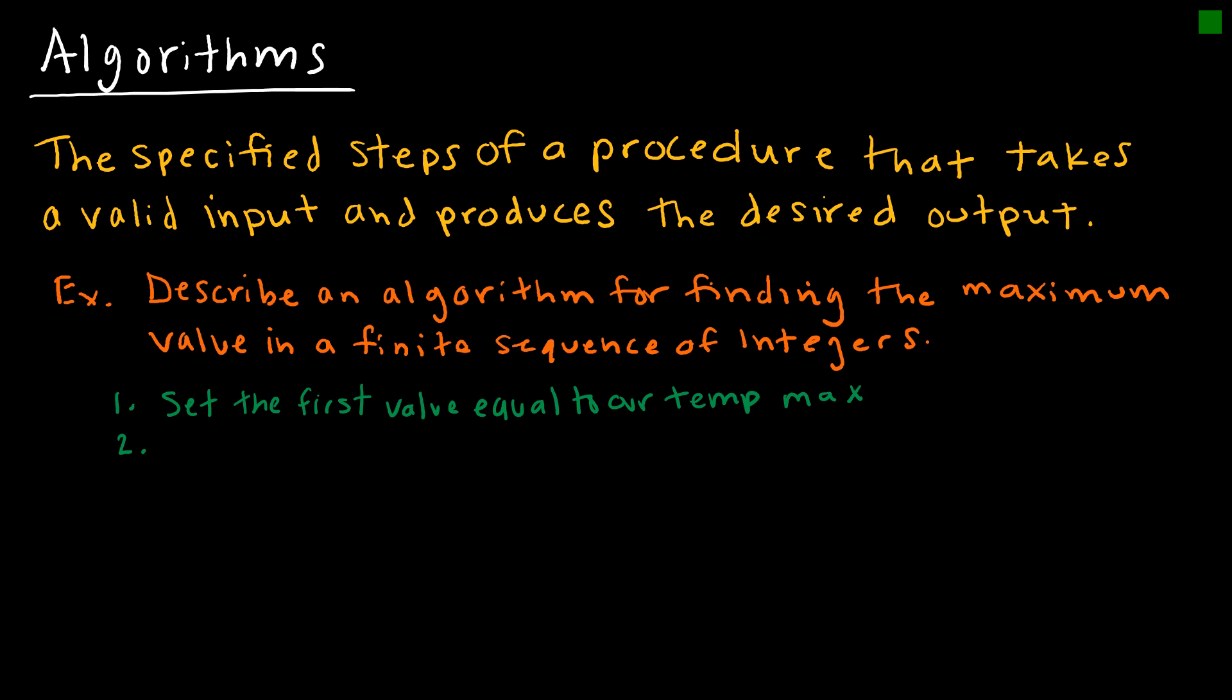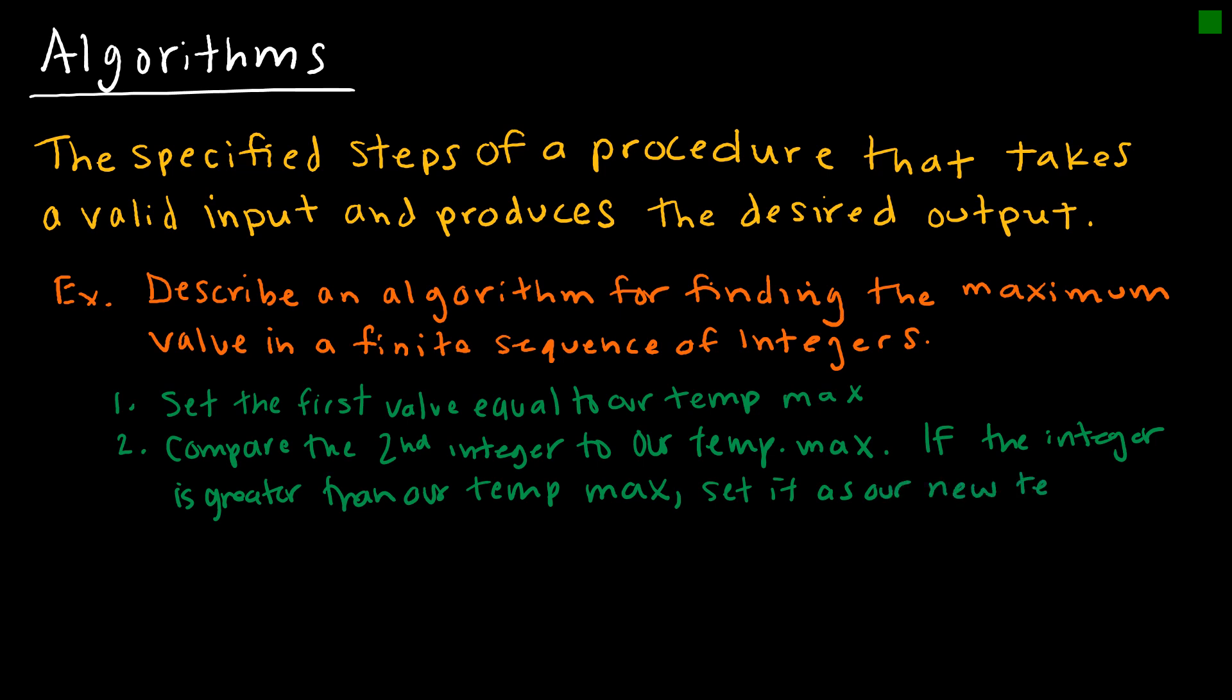Then what's going to happen? We're going to compare the second integer to our temporary max. If the integer is greater than our temporary max, what are we going to do? We're going to set it as our new temporary max.